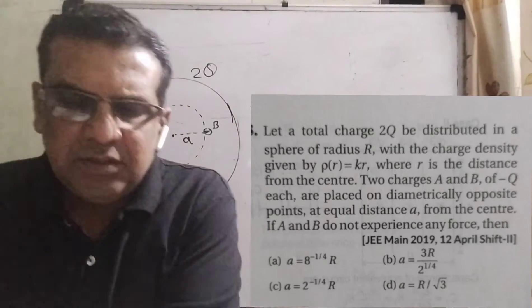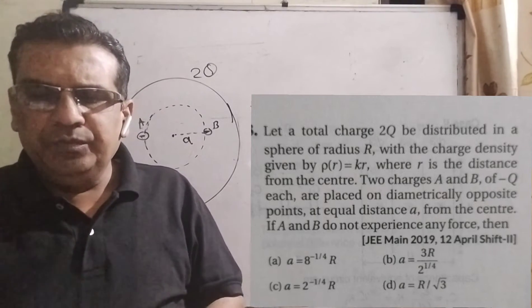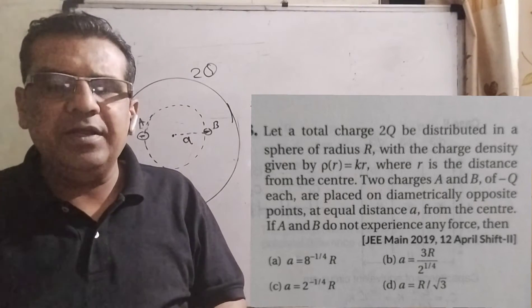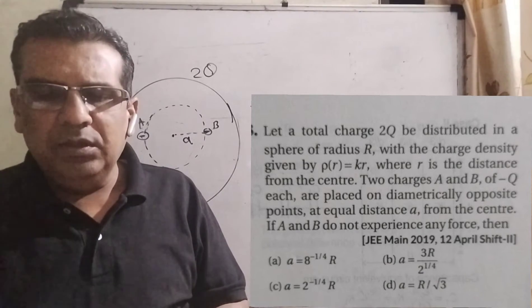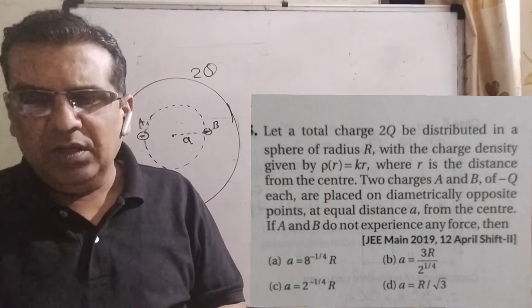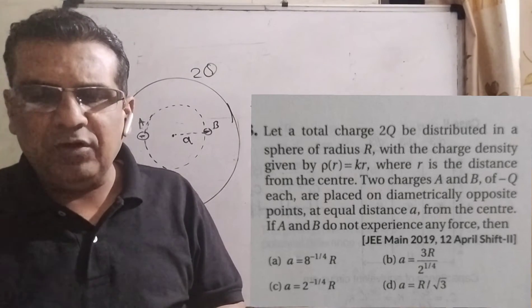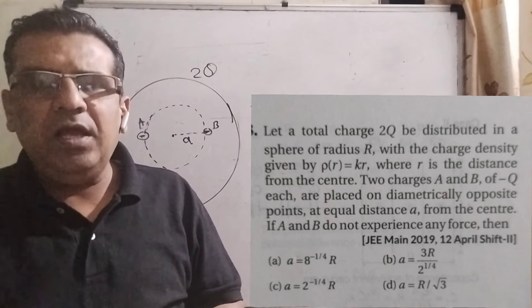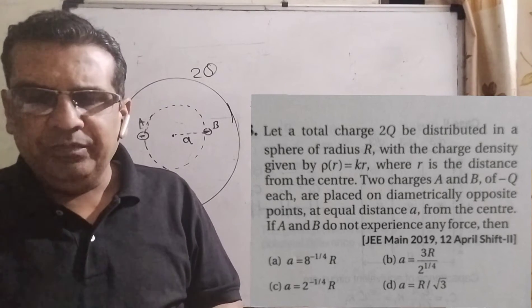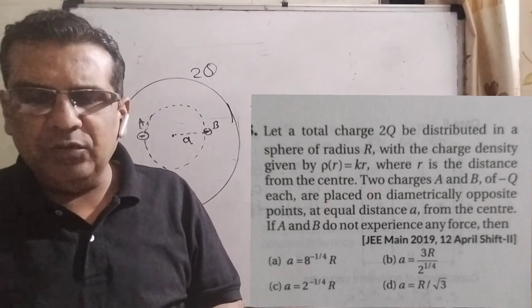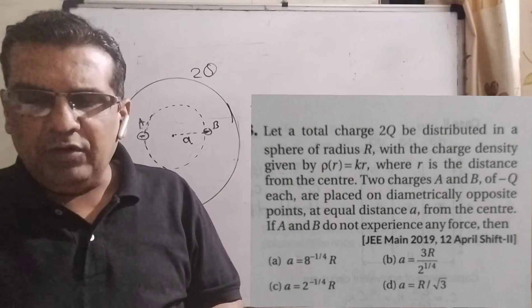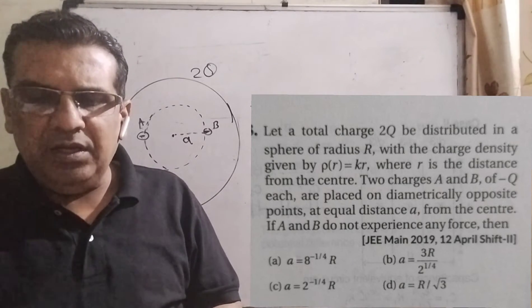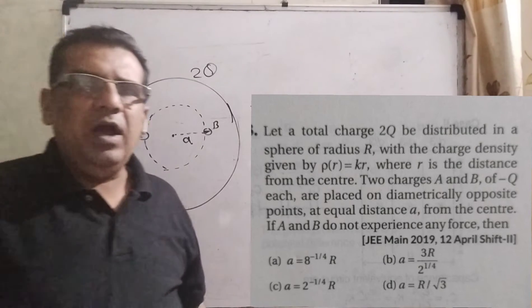Here is what the question says: Let a total charge 2q be distributed in a sphere of radius capital R, with the charge density given by rho as a function of r equal to k·r, where r is the distance from the center. Two charges A and B of minus q each are placed on diametrically opposite points at equal distance a from the center. If A and B do not experience any force...